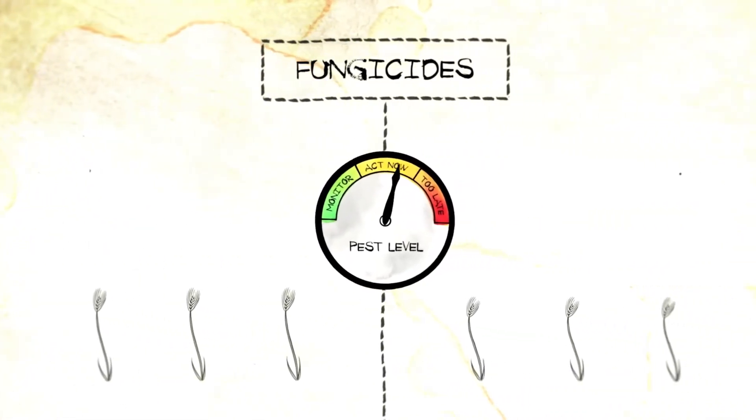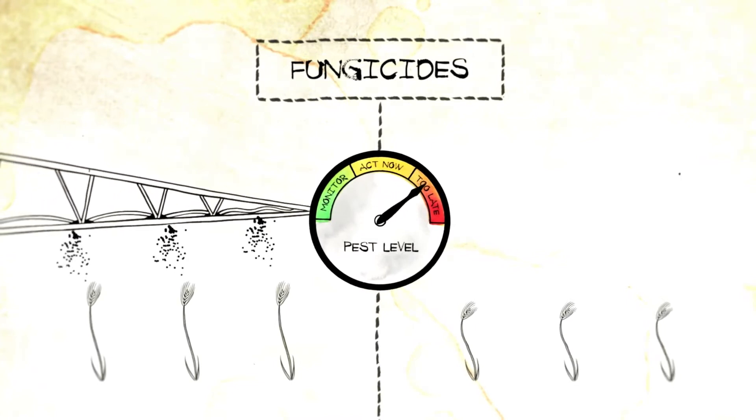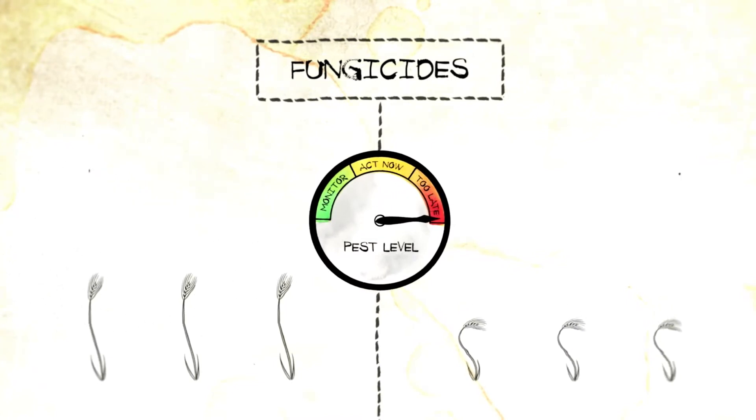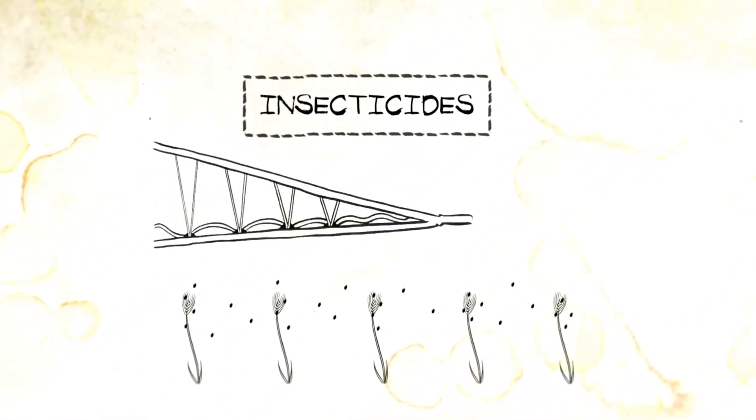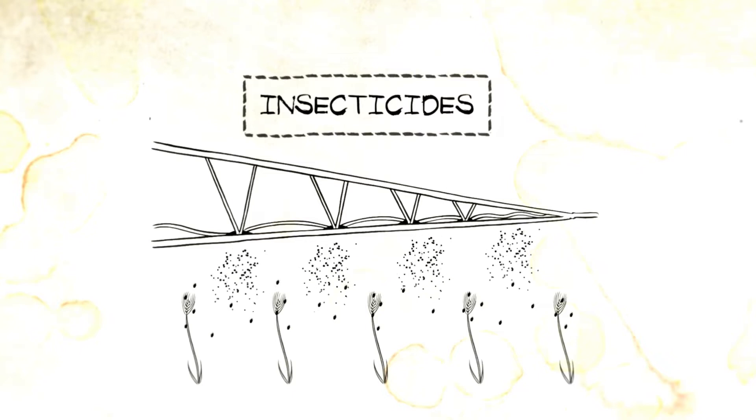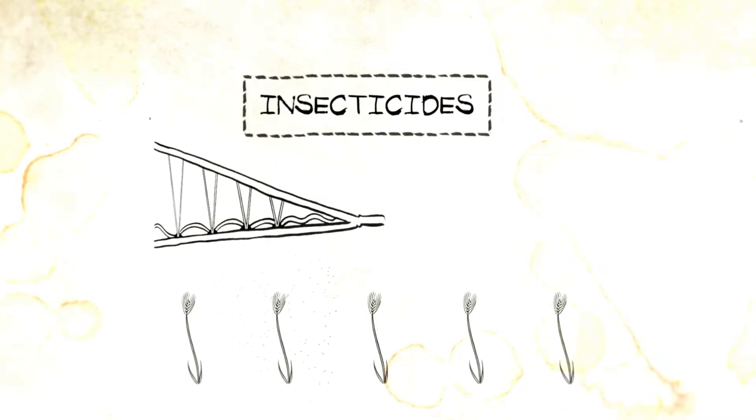Fungicides control plant diseases that can damage or even completely destroy crops. At times plant diseases also cause the grain to be unsafe to eat. Insecticides control insect infestations that eat away at crops. Insects can cause abnormal growth or even destroy the crops completely.